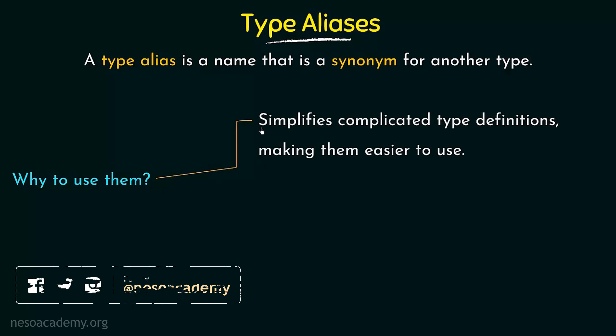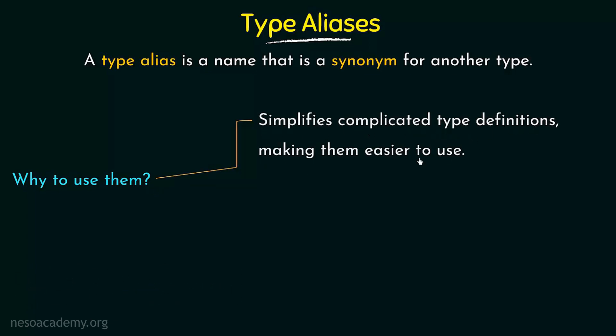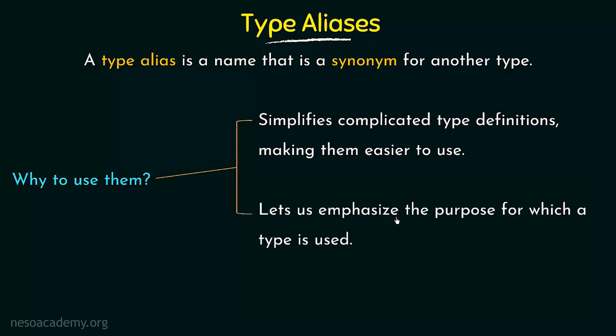There are two reasons. The first one is it simplifies complicated type definitions, making them easier to use. There may be some type definitions that are a bit complicated. As you move ahead and deal with different kinds of types, you will see that there could be complicated type definitions, and you may think about what if this had a different name — it will simplify that for you.